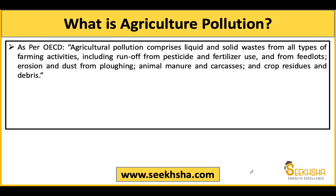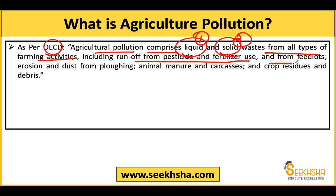For the introduction, you can use the OECD definition of agriculture pollution. OECD defines agriculture pollution as including runoff from pesticides and fertilizer use and from feedlots, soil erosion, dust pollution, animal emissions, animal carcasses, and crop residue debris.